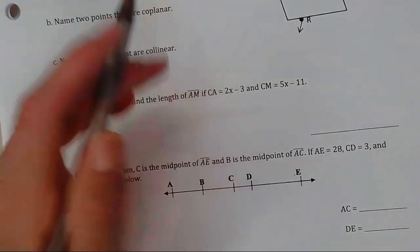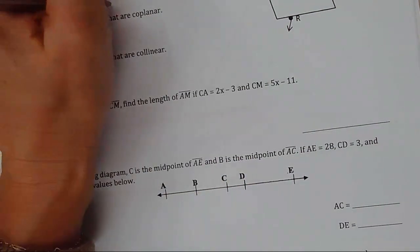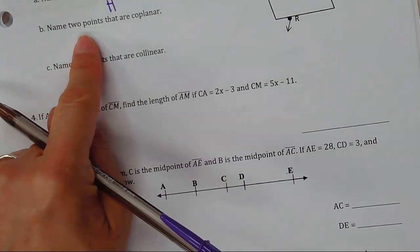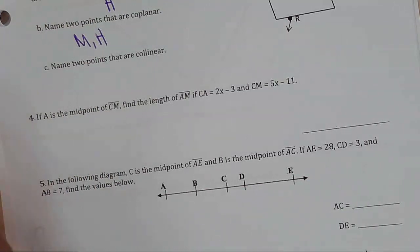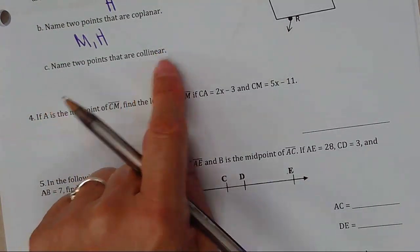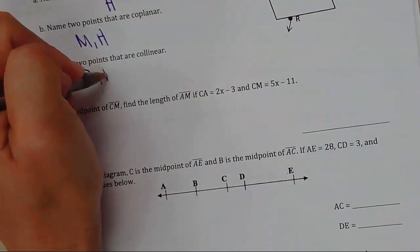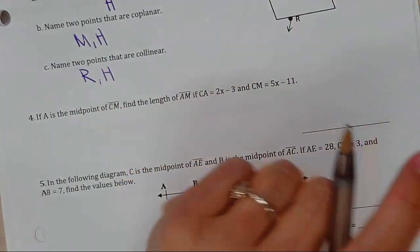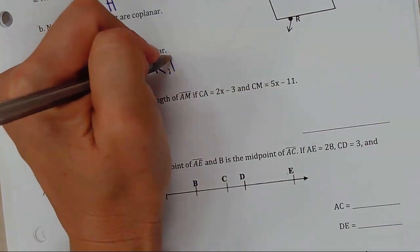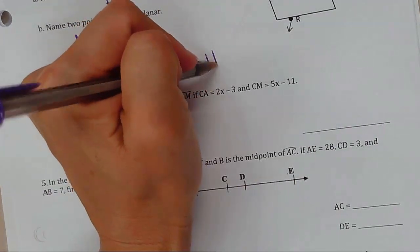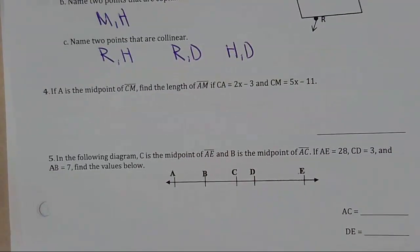Name the intersection of the line and the plane — imagine a line going through a piece of paper, so H would be that point. Two points that are coplanar would be M and H. Two points that are collinear: you could say RH, R and D, or HD — those are all collinear.